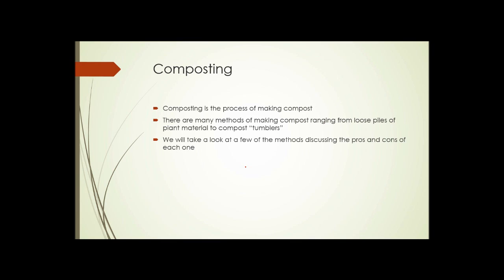Composting is the process of making compost. It's a natural process that goes on in soils all the time, and on the surface of soils as well — but when humans do it, we want to accelerate the process, usually to get it happening faster so we can make use of it. There are many methods of making compost, ranging from loose piles of plant material to things such as compost tumblers, and we're going to take a look at a few of the methods and discuss some of the pros and cons of each.